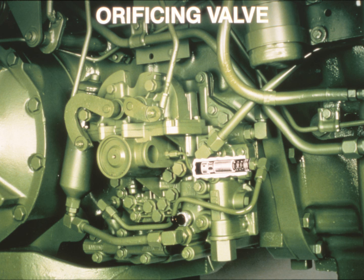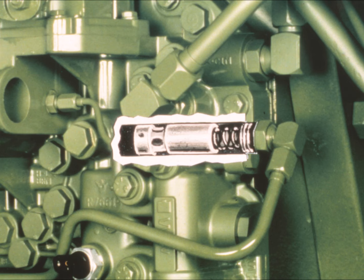We'll look at the orificing valve first. It smooths out shifts from speed to speed by restricting the flow of engagement oil. The orificing valve is a two-position valve. At speeds 1 to 11 forward, engagement oil flows unrestricted through the valve. At speeds 12 to 15, the orificing valve shifts to its other position, in which engagement oil has to flow through a small orifice — you can see the orifice in the land at the end of the valve spool. By restricting the flow of engagement oil during shifts at transport speed, the orificing valve helps make those shifts smoother.